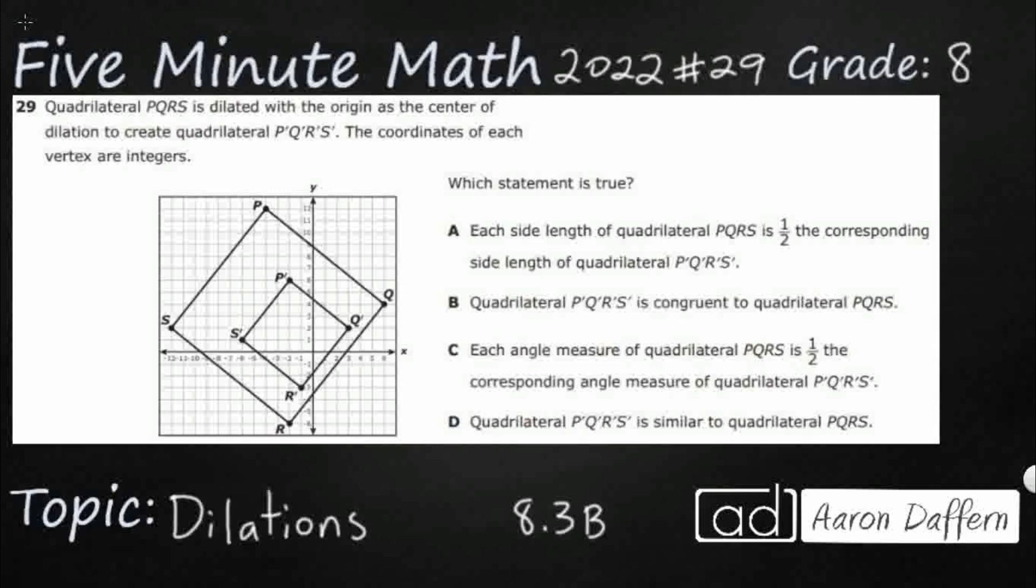So we've got quadrilateral PQRS. That's this big one out here. Looks like a square, but they don't name it a square, they just name it a quadrilateral. It's dilated with the origin as the center of the dilation to create quadrilateral, a smaller one here, P'Q'R'S'. Also looks like a square, but not 100% sure. The coordinates of each vertex are integers. All right, so that's helpful. If we needed to plot anything here, we know that each coordinate we can actually put some points on there if we needed to.